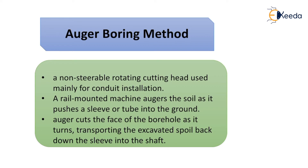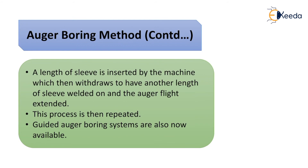The auger boring method uses a non-steerable rotating cutting head, used mainly for conduit installation. A rail-mounted machine augers the soil as it pushes a sleeve or tube into the ground. The auger cuts the face of the borehole as it turns, transporting the excavated spoil back down the sleeve into the shaft. A length of sleeve is then inserted by the machine, which withdraws to have another length of sleeve welded on and the auger flight extended. This process is repeated until the boring is complete. Thank you.